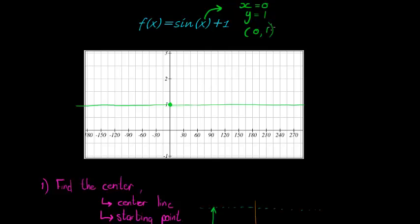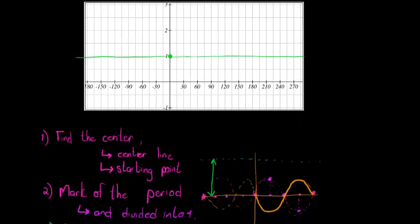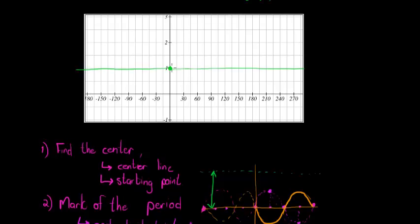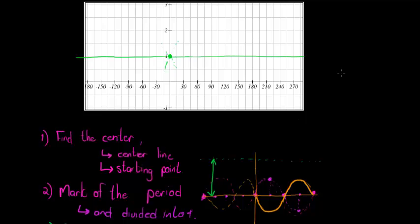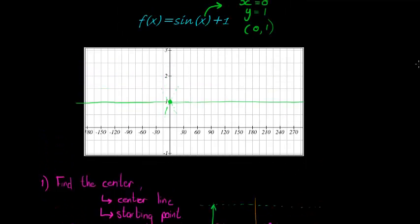The next thing that I need to do, I've got my center point or my starting point. My graph is either going to go up there like that and down there like that, or maybe it's reflecting. It's going in that direction, but the next thing we do is we mark off the period.